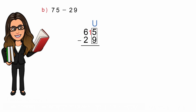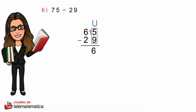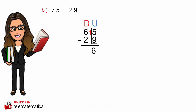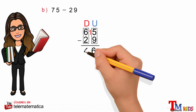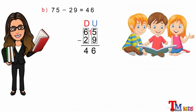15 menos 9 es igual a 6. Y en tercer lugar, identificar la columna de las decenas y restar. 6 menos 2 es igual a 4. Y este resultado lo escribimos en la operación de 75 menos 29.